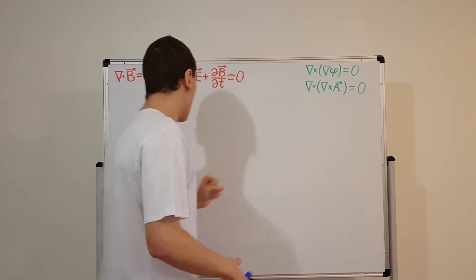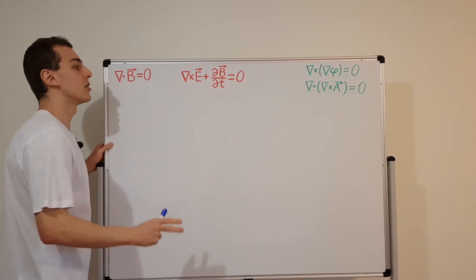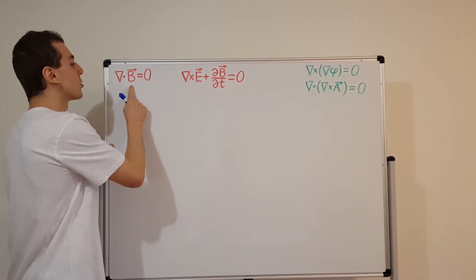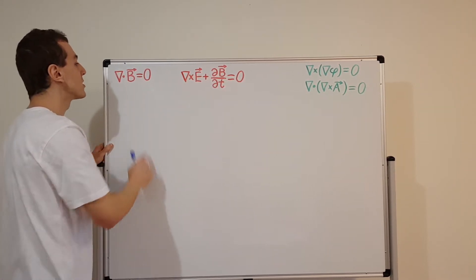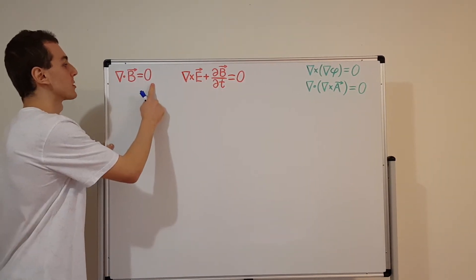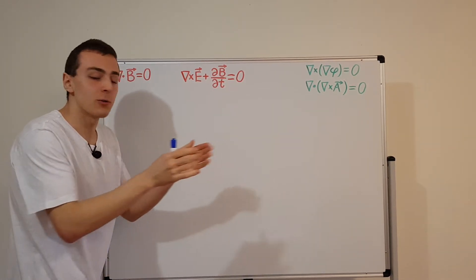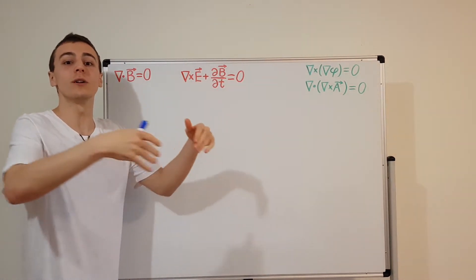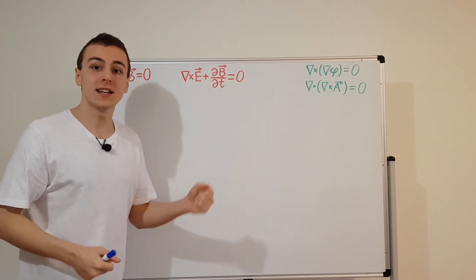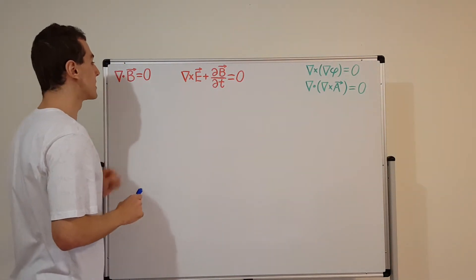Now let's use these vector identities and the homogeneous pair of Maxwell's equations to derive the desired relationships. First, let's take Gauss's law for magnetism, which tells us there are no magnetic monopoles — any magnetic field coming out of a region must have a corresponding field going in. So the divergence of the magnetic field is equal to zero.